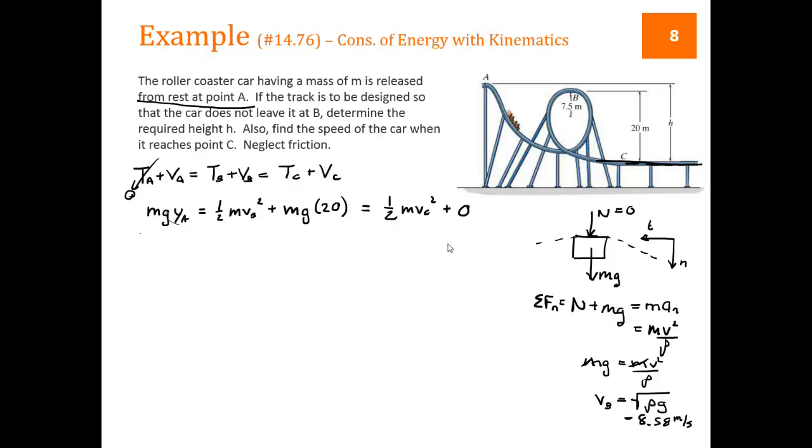Now we know VB, we can come back over to this expression and plug in VB. We're looking at the first two sides. We've got MGYA equals 1/2 M times 8.58 squared plus MG times 20. There's an M in each case. They cancel and we can solve for YA because it's the only unknown. YA turns out to be 23.75, which in the diagram is called H.